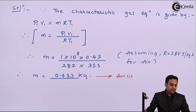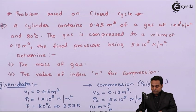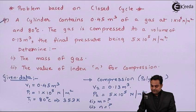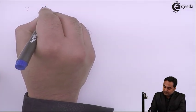Next, they have said to also calculate the value of polytropic index which is n. So here I'll say that for the process